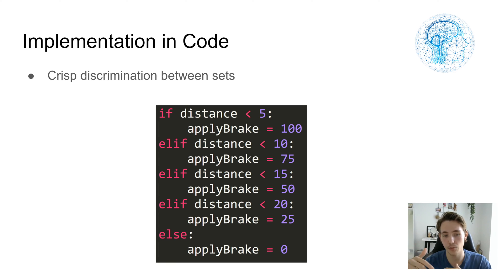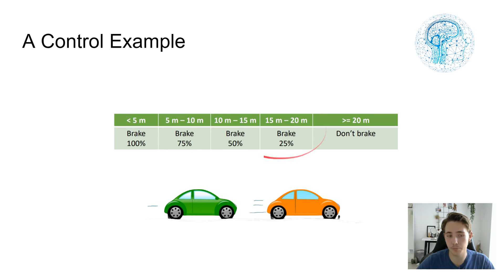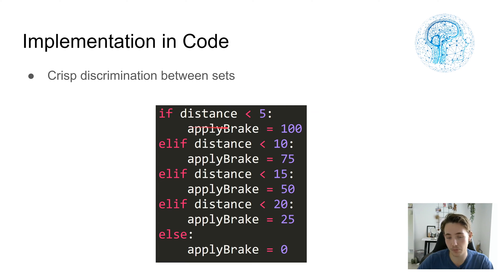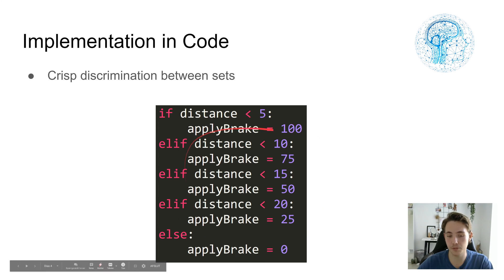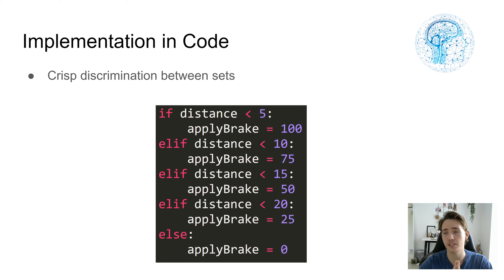If we want to implement this kind of controller in code, we can do it with a switch statement or state machine where we are in different states. This is called crisp discrimination between sets, because we have rules set up — if something is true, then do something. So if the distance is less than five meters, we apply the brake 100%, and we keep doing the same for the other states. The problem is that it's either apply the brake 100% or 75% — it's a crisp discrimination.